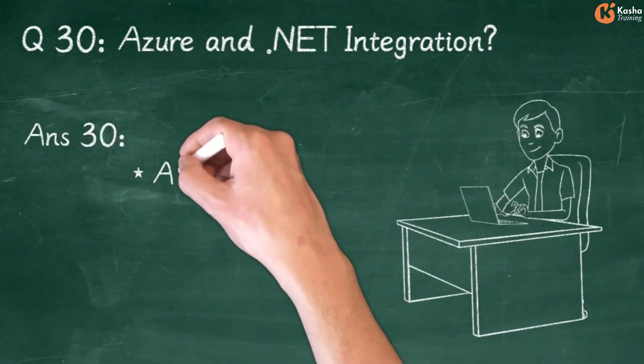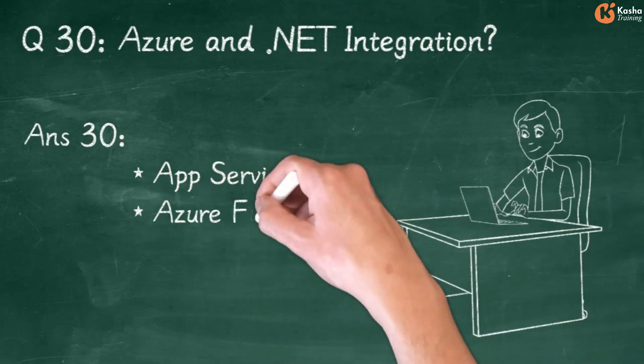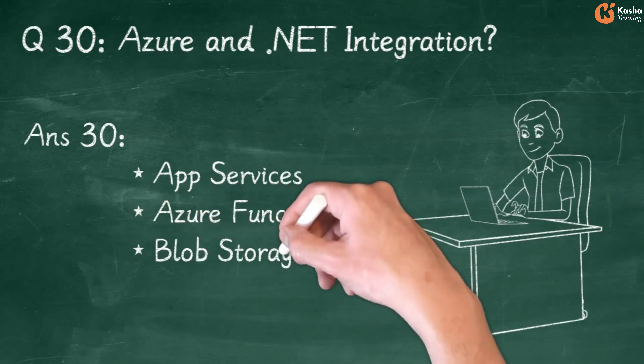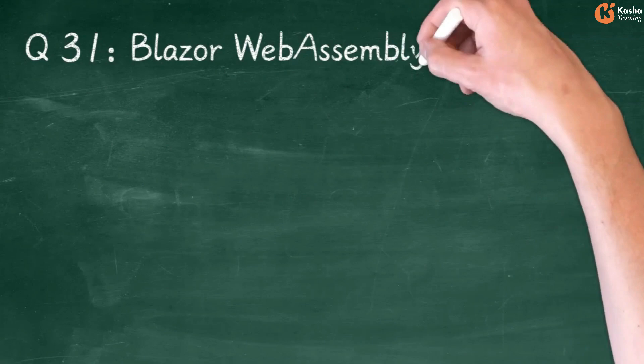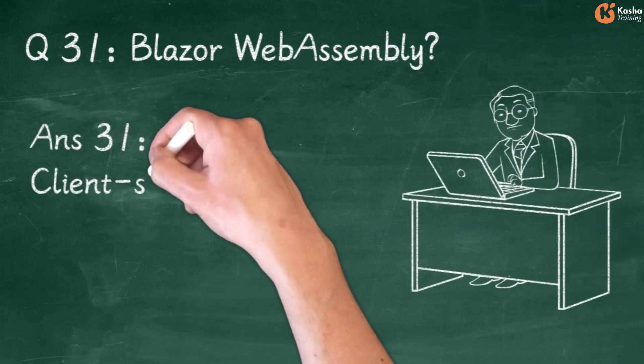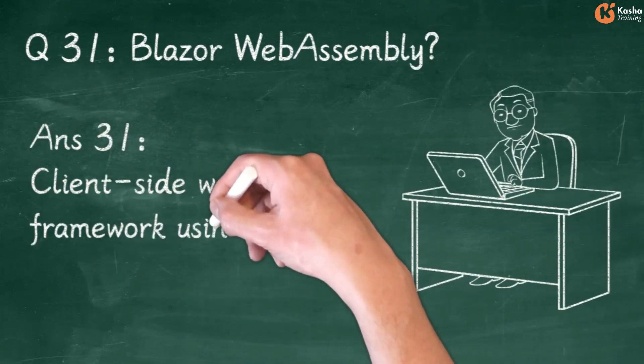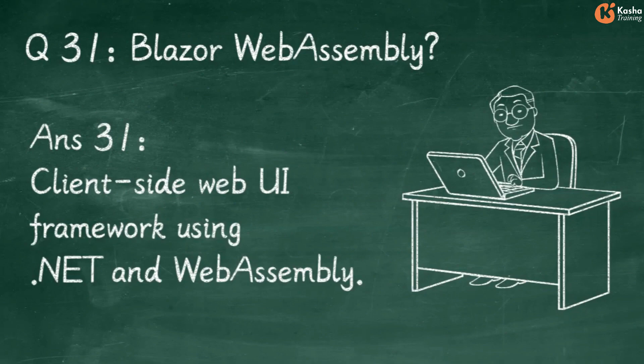Answer 30: App Services, Azure Functions, Blob Storage, Cosmos DB. Question 31: Blazor WebAssembly. Answer 31: Client-side Web UI Framework using .NET and WebAssembly.